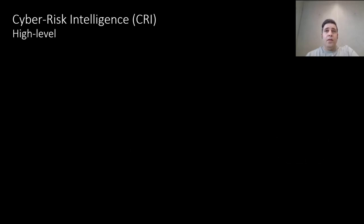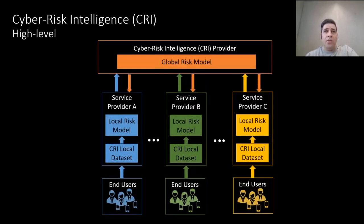In this work, we design and develop a cyber risk intelligence sharing system for mobile platforms, CRI systems. Our platform concentrates on sharing risk and tackles the challenges of already existing CTI systems. Our core idea is to share knowledge about security risk in the form of machine learning models. In particular, we apply federated learning concepts to enable participants to collaboratively build a global risk model for detection.